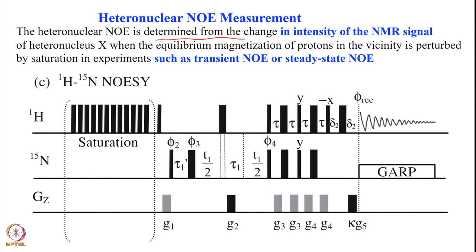In the first experiment we saturate the proton signal and then measure how much this perturbation affects the heteronucleus X when the equilibrium magnetization of proton is perturbed. We measure it either as a transient NOE or a steady-state NOE. The experiment uses 3 channels: the proton channel, the nitrogen-15 channel, and the gradient channel. You start by perturbing the proton signal exclusively with saturation pulses.